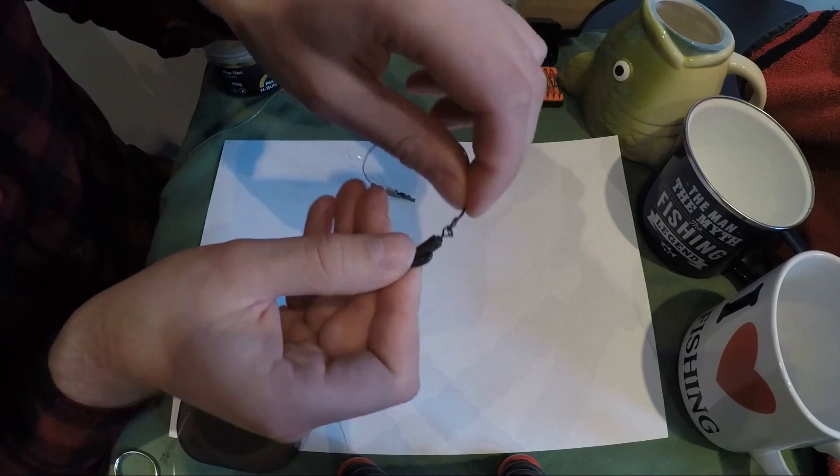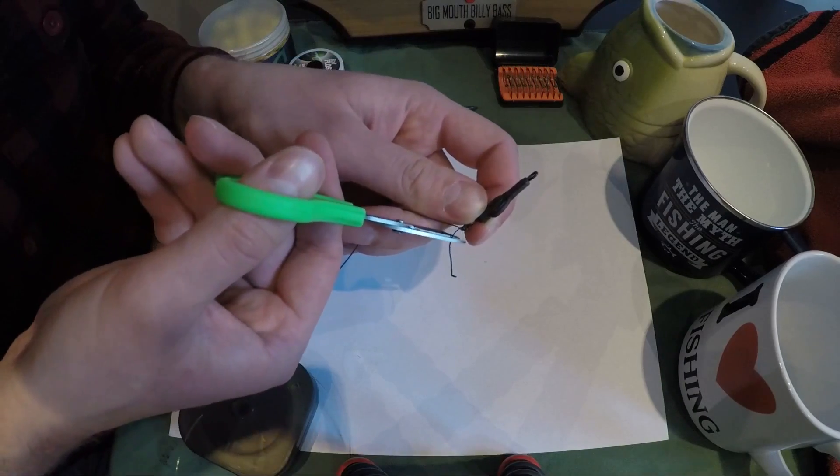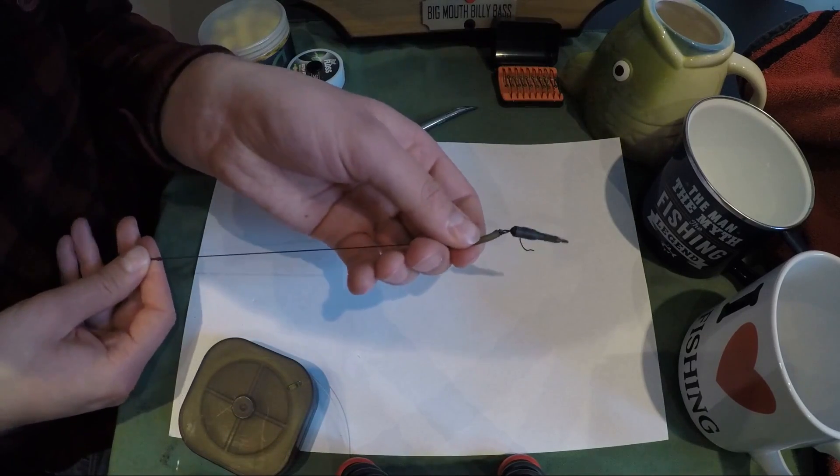Now we just pass the loop over the knot down onto the swivel section of the clip, moisten it and pull it tight. Off comes the tag end and the anti-tangle sleeve gets pushed over it. There we go, so that is effectively the hook link tied.